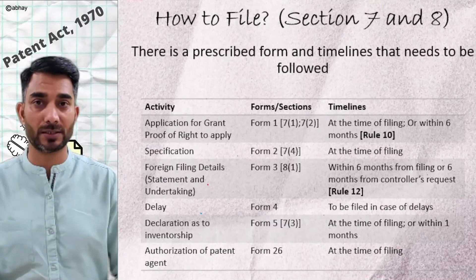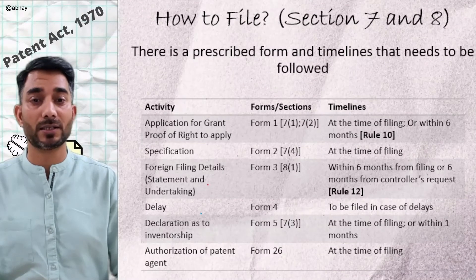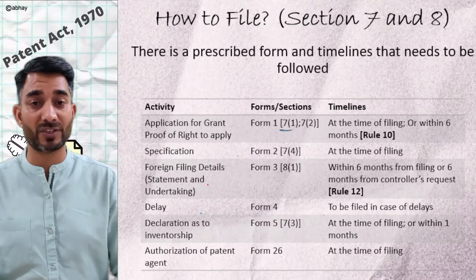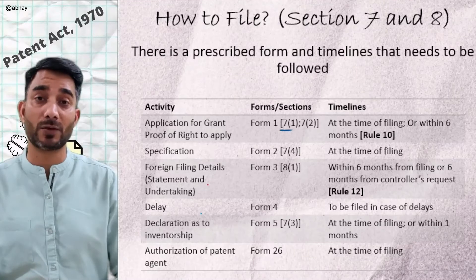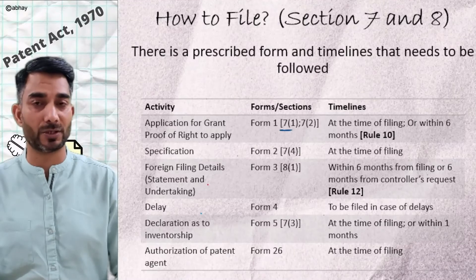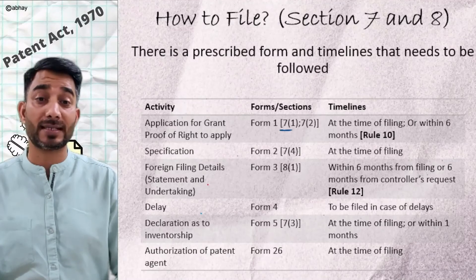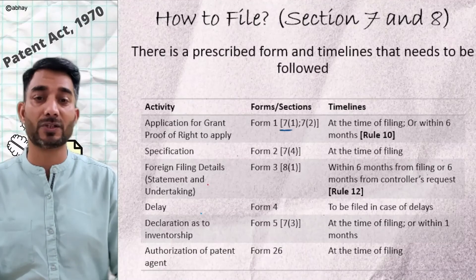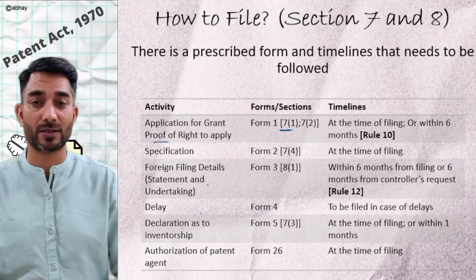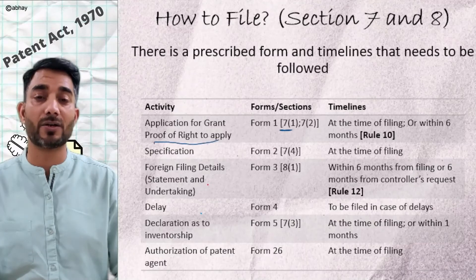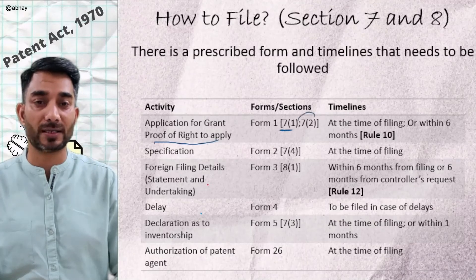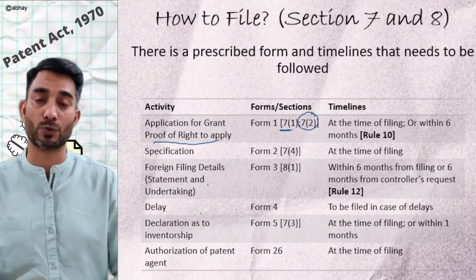Important sections to remember here are 7-1, which states one invention per application. You cannot file multiple inventions in an application. In case inventors have assigned their right, then proof of right to apply for the applicants should be filed as per 7-2.